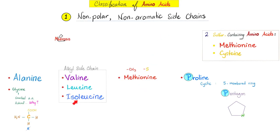Do you remember valine, leucine, and isoleucine? They have alkyl side chains and are also branched amino acids. What's the name of the enzyme that breaks them down? It's called branched chain alpha-ketoacid dehydrogenase. This enzyme is deficient in a disease known as maple syrup urine disease. If you don't have this enzyme, valine, leucine, and isoleucine will accumulate in your body, causing symptoms.